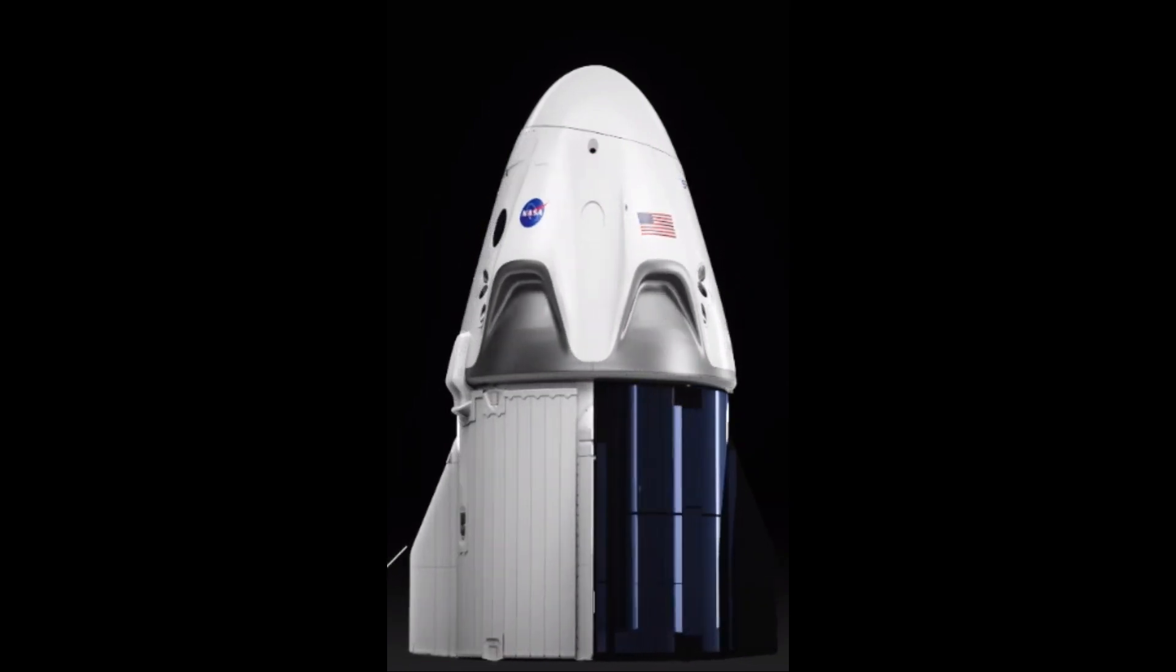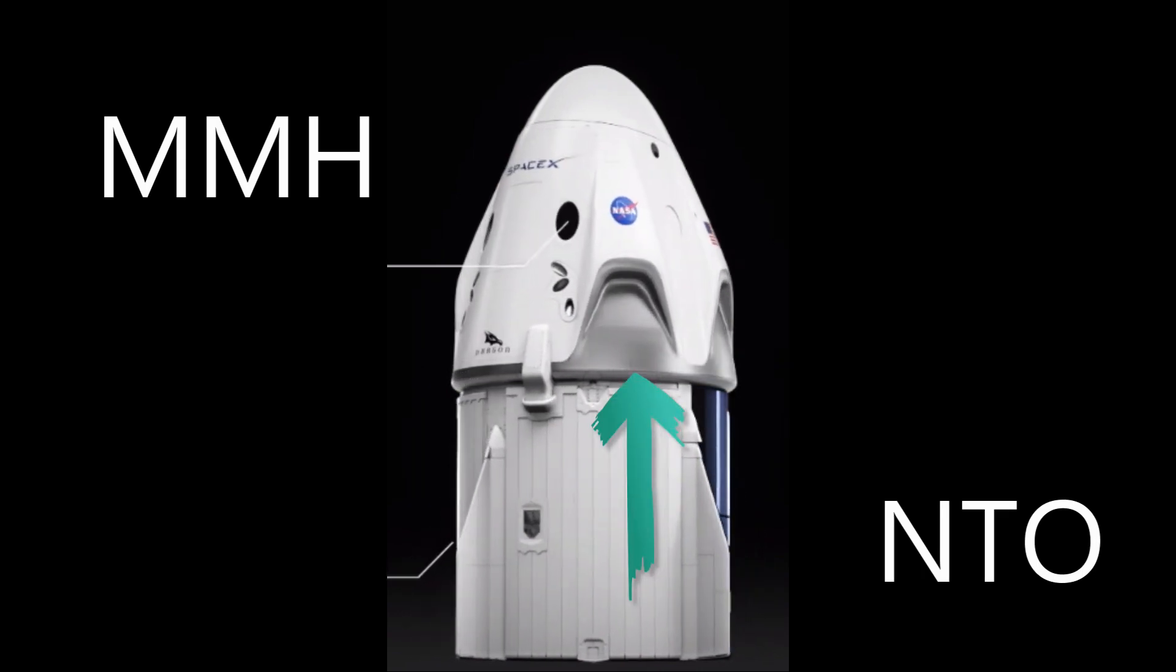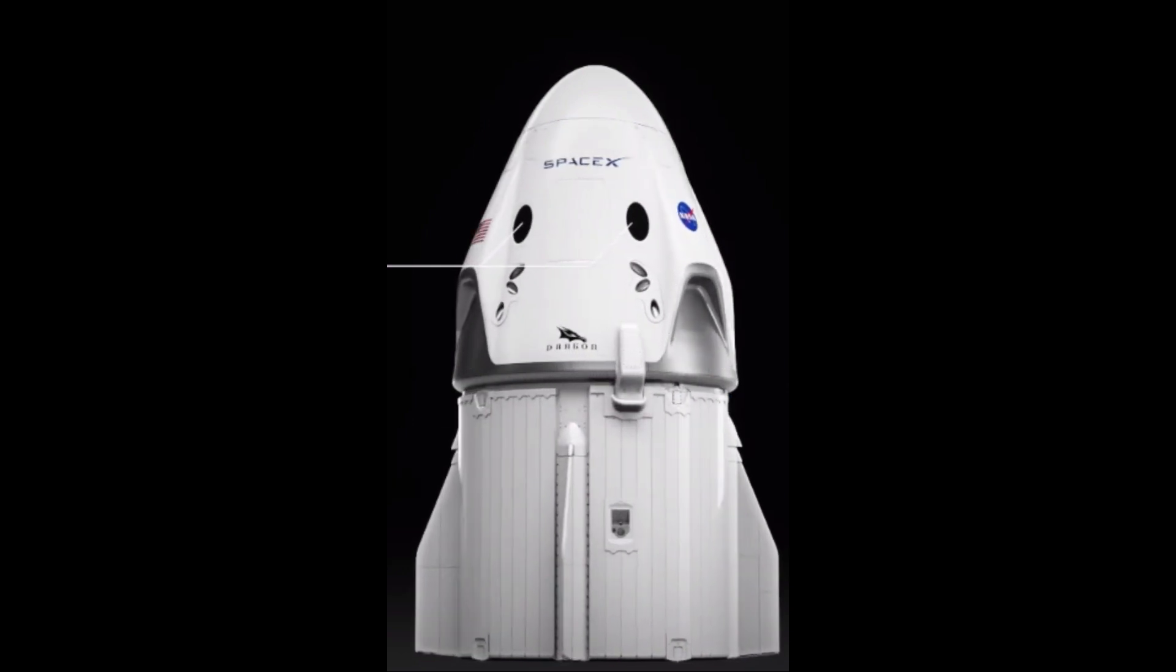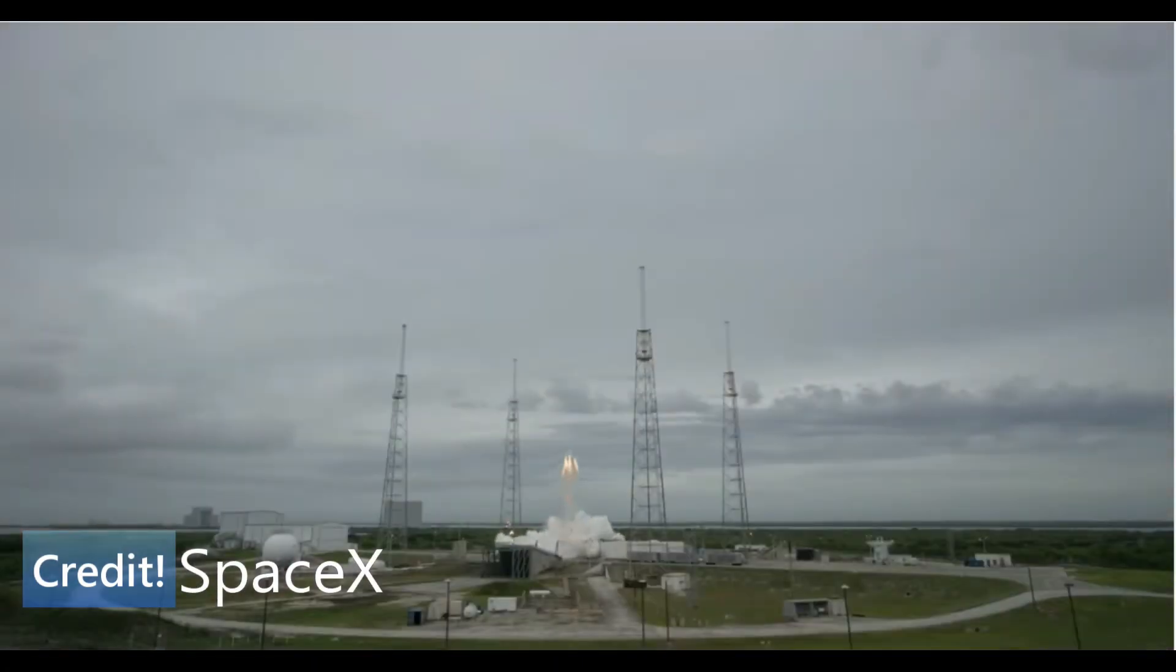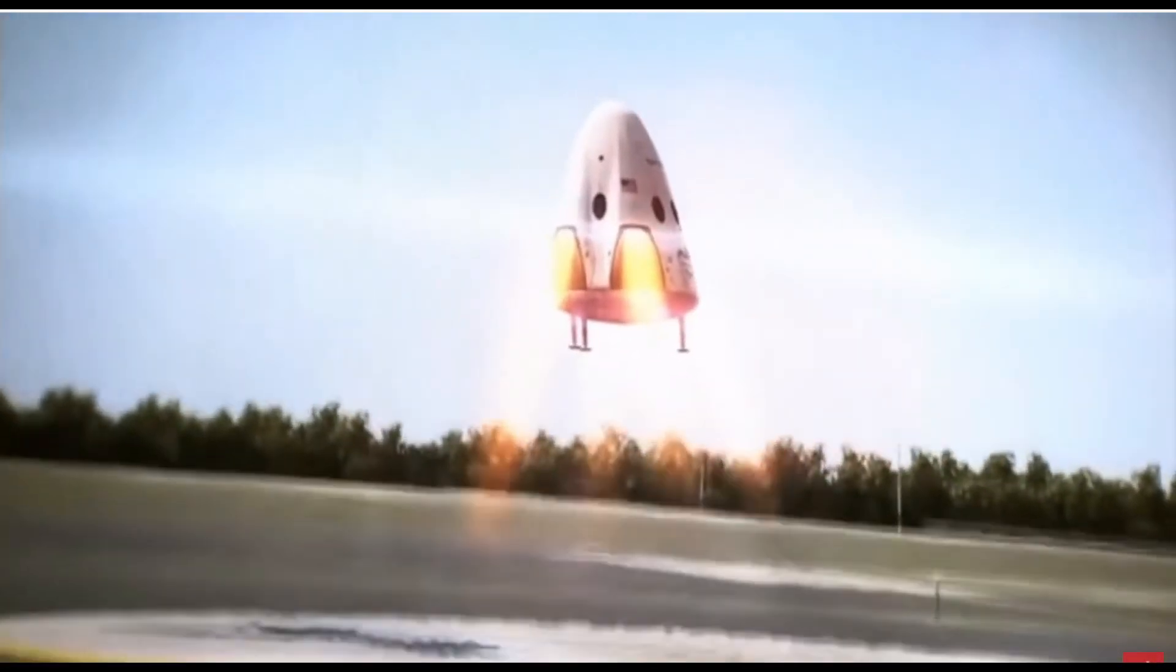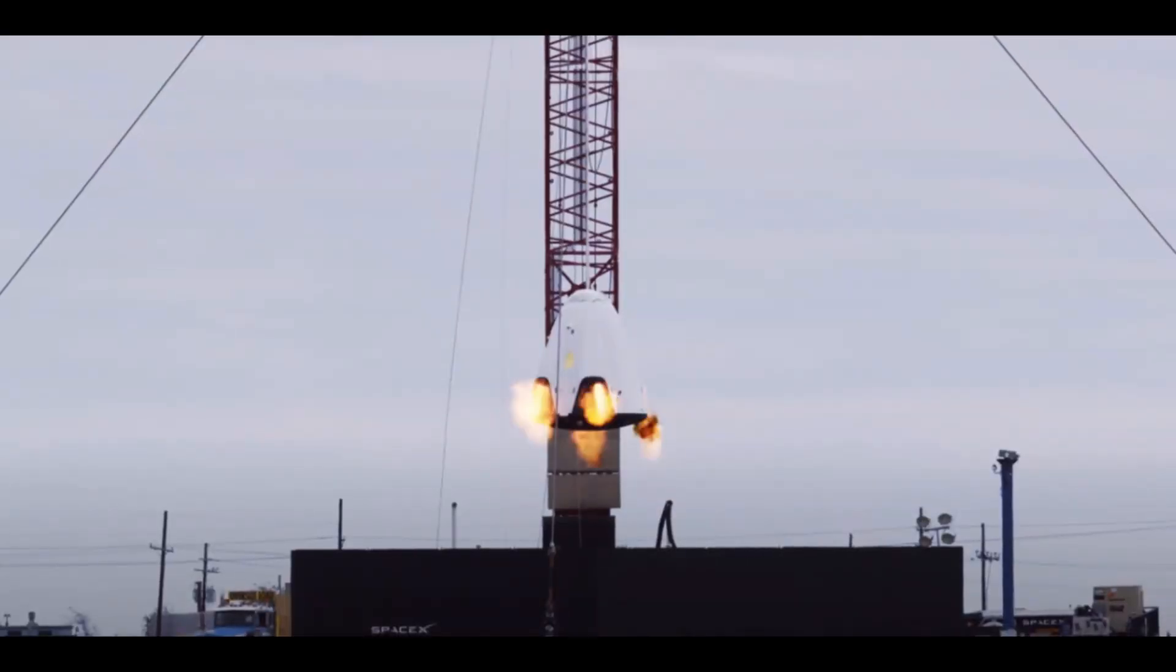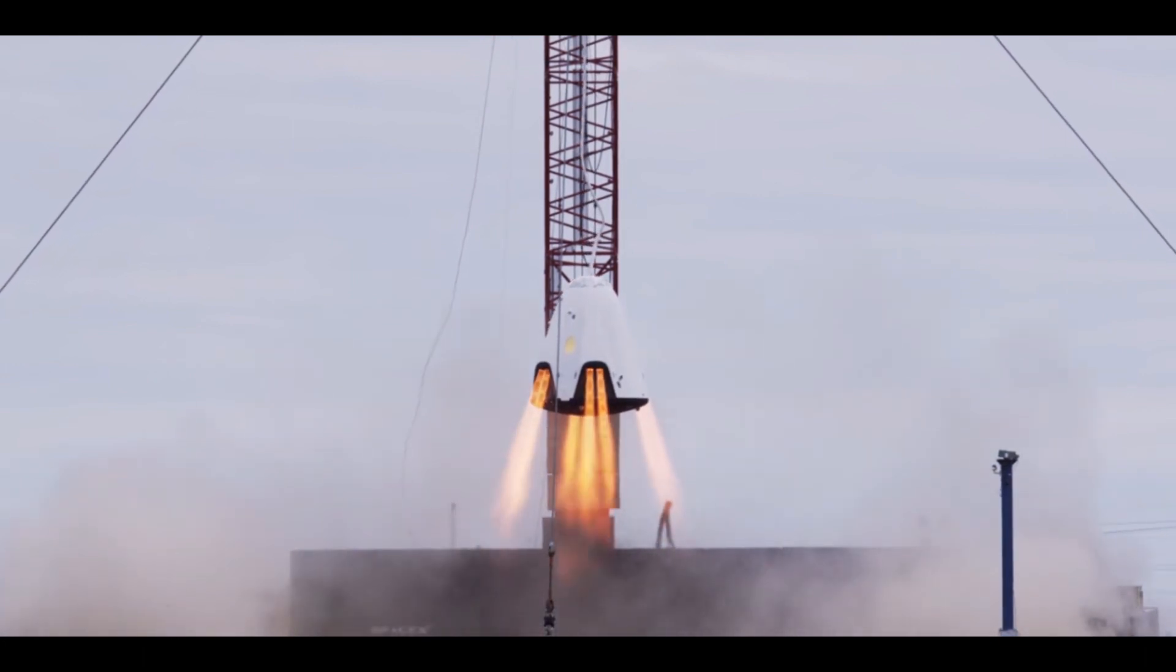The Super Draco thrusters also use MMH and NTO. They are similar to but much bigger and more powerful than the Draco thrusters. These can produce up to 73,000 newtons of force but usually operate at 68,000 to 70,000 newtons to improve stability. They were originally planned to be used for propulsive landing but NASA was not excited about this new concept. These engines can be throttled from 20 to 100% power and can ignite and go to full thrust in only 100 milliseconds, a tenth of a second.